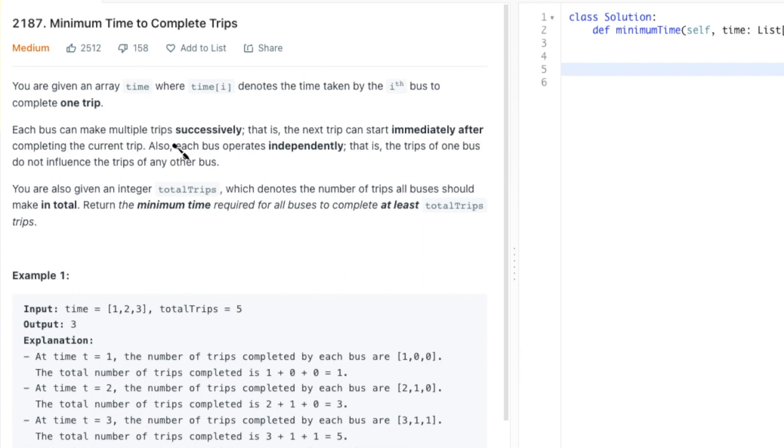Each bus can make multiple trips successively, that is, the next trip can start immediately after completing the current trip. Also, each bus operates independently, that is, the trips of one bus do not influence the trips of any other bus. You're also given an integer total trips, which denotes the number of trips all buses should make in total. Return the minimum time required for all buses to complete at least total trips trips.